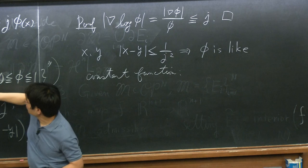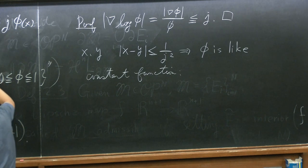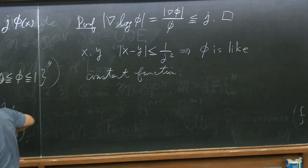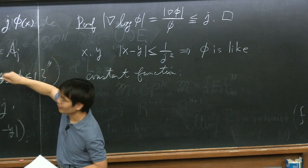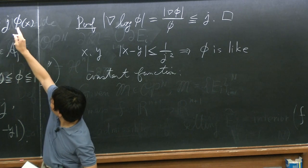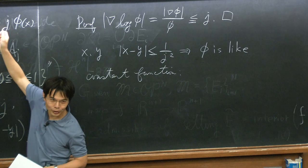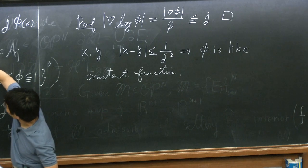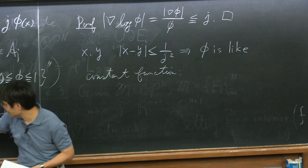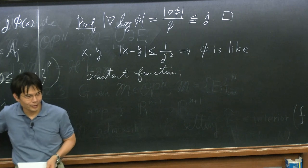Any C2 function with bounded C2 norm can be almost in this class for j large enough: given any such function, just add a small positive number δ, and as long as you choose j large enough, it will be in script A_j, because δ bounds the function from below. Note that φ cannot be zero anywhere in this class — if it's zero at some point it would have to be identically zero.